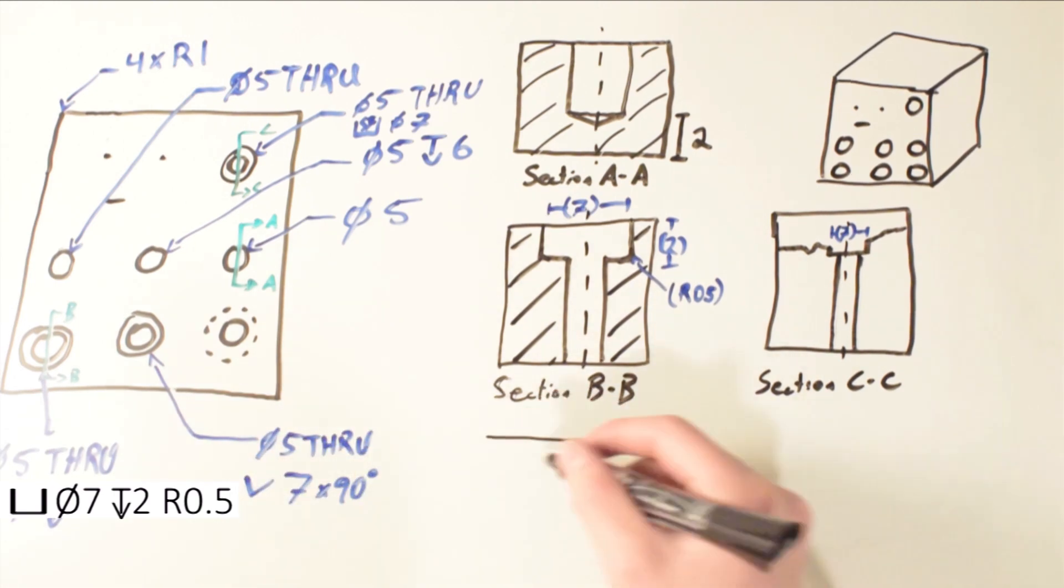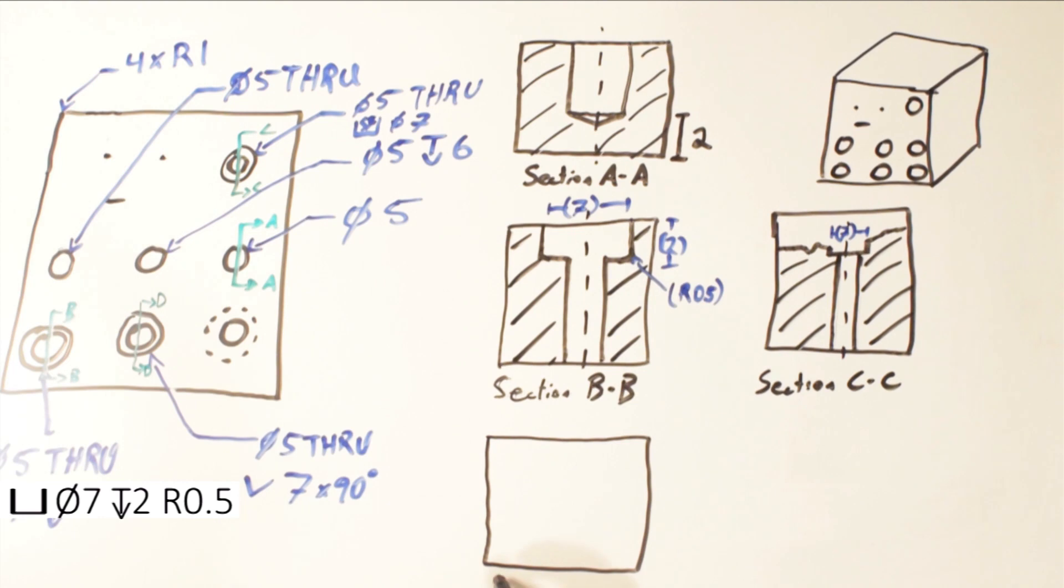The final common thing you may see with the hole is a countersunk callout, which is formatted by the symbol, the max diameter of the countersink, and the angle of the countersink.